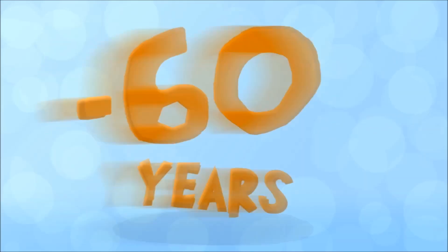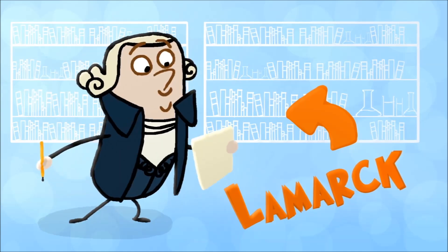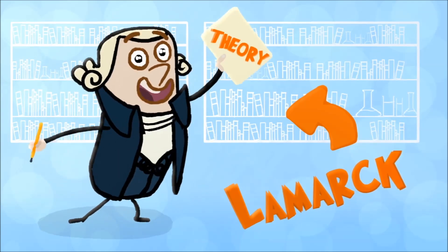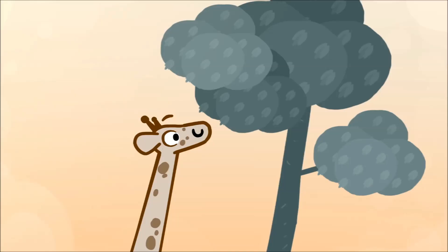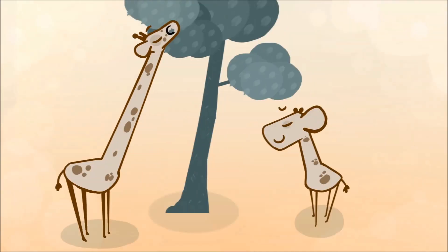Almost 60 years before Darwin published his book, Jean-Baptiste Lamarck proposed that creatures evolve by developing certain traits over their lifetimes and then passing those on to their offspring. For example, he thought that because giraffes spent their lives stretching to reach leaves on higher branches, their children would be born with longer necks.